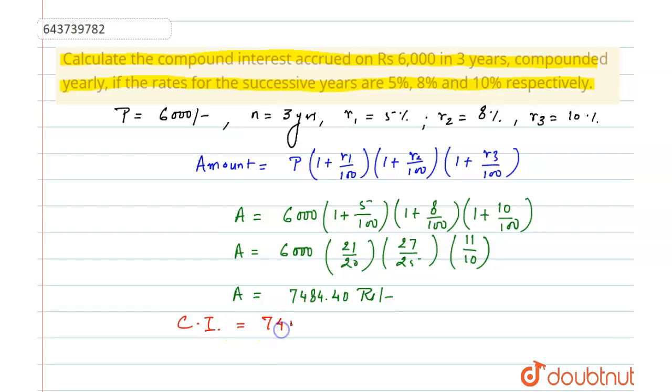So amount is 7,484.40 minus principal amount is 6,000. So our compound interest will be 1,484.40, and this will be our answer. Thank you.